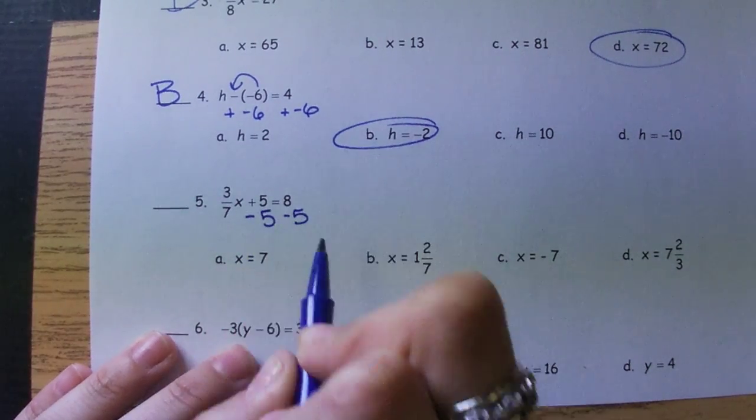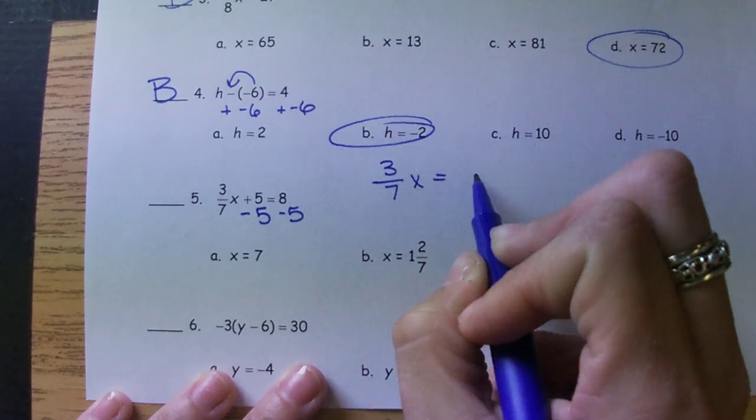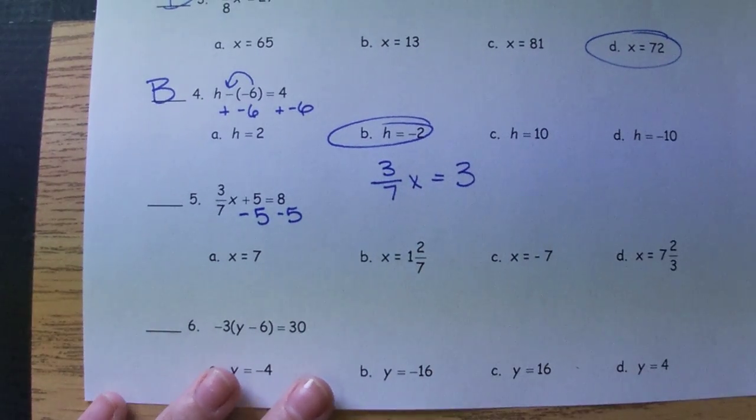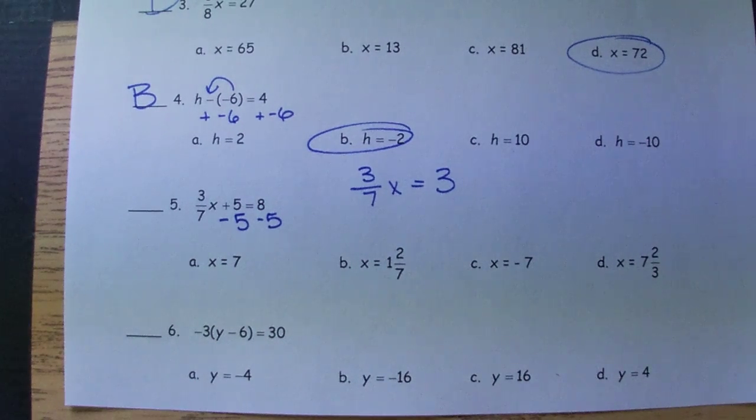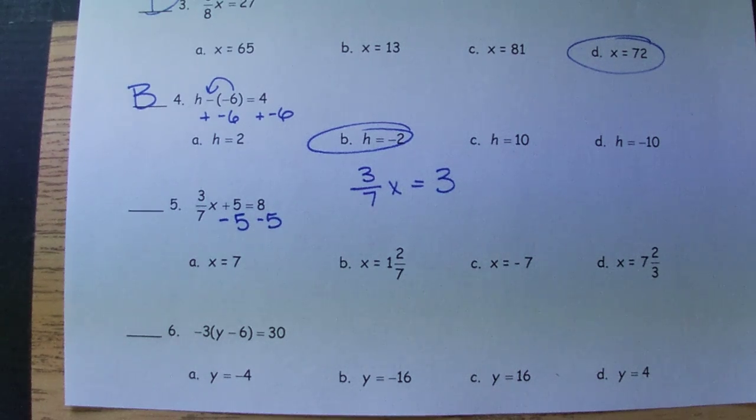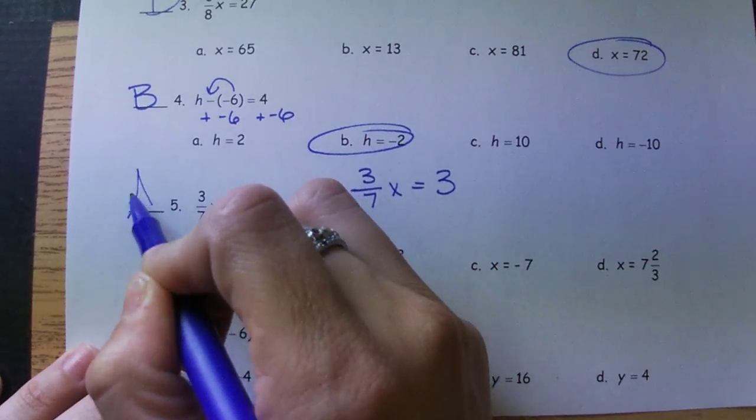We undo addition and subtraction first, so on number five, we're going to subtract the 5. And then we will either multiply the reciprocal, multiply by 7 and then divide by 3, or divide by the three-sevenths. Any of those options are fine. You just can't mix the options up. So we get 7, which is A.